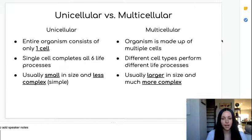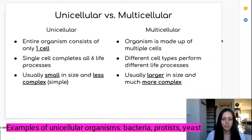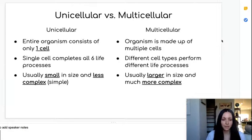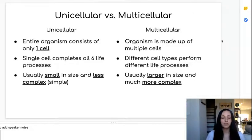Since it's an organism, we know it's alive. Therefore, that one single cell on its own must complete all six of the life processes that we discussed in our first lesson — things like reproduction, adaptation, and the use of energy. One single cell performs all of those processes by itself. These organisms, being made up of only one single cell, tend to be very small in size and not very complex — meaning pretty simple organisms.